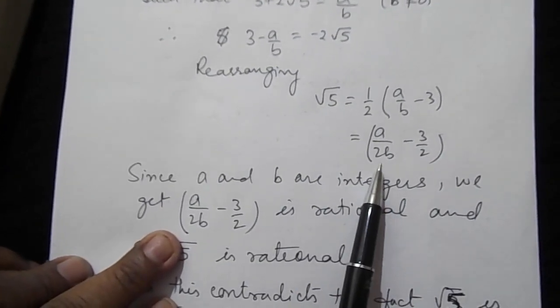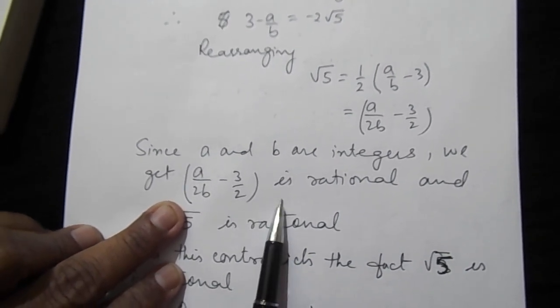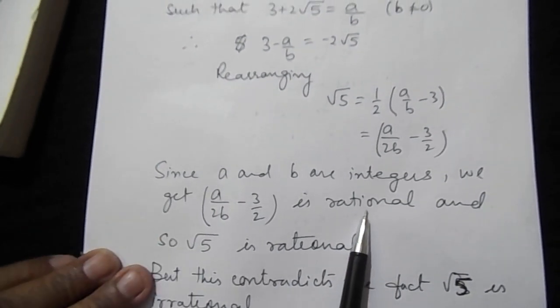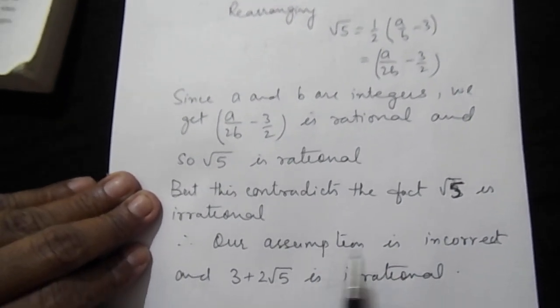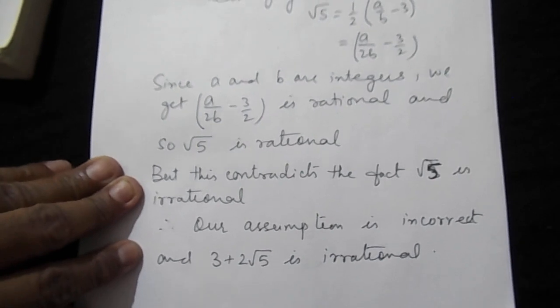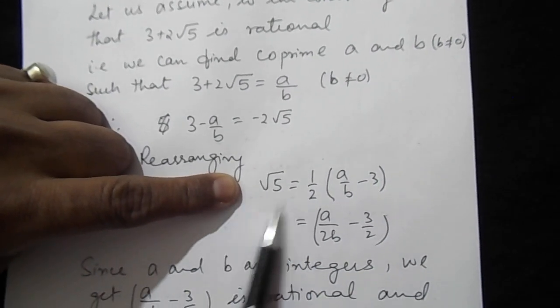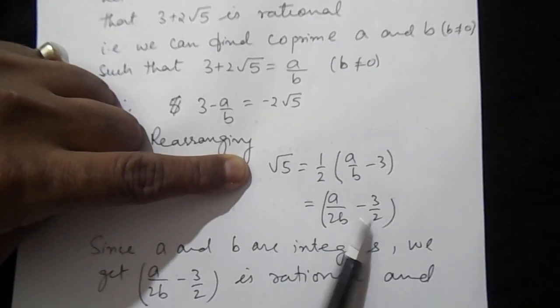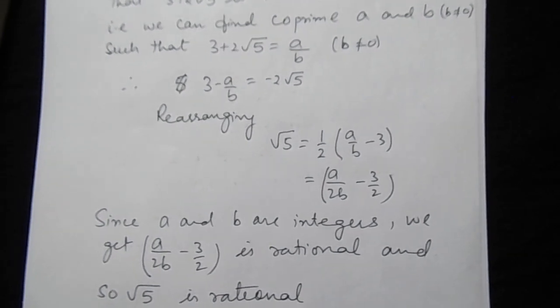After rearranging, we get that a/(2b) − 3/2 is a rational number, since a and b are integers. If this expression is rational, then √5 would also be rational. But this contradicts the fact that √5 is irrational. Hence our assumption is incorrect and 3 + 2√5 is an irrational number. This is the key step: a rational cannot equal an irrational.